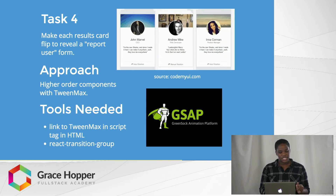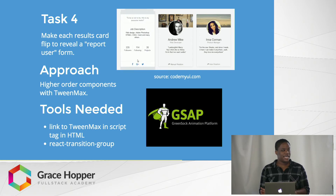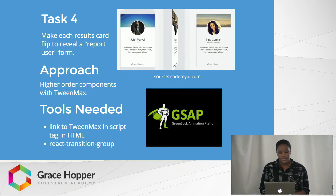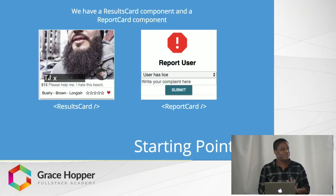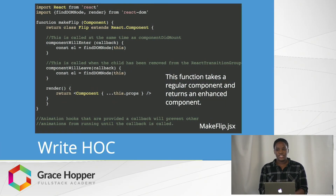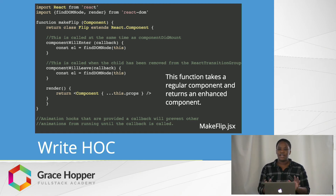Just get the script tag for TweenMax from their website and put it in your HTML. And then we're going to need React Transition Group again. So here's our starting point. I have some results cards and some report cards that you saw on my results page. First, we're going to write our higher order component. As Sarah talked about last week, a higher order component is a function that takes a component and returns an enhanced component. So here we're going to enhance our components with some animations.